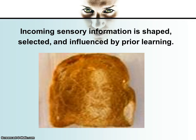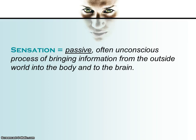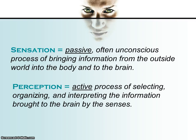Our brains are doing more than just registering sensory information. We are constantly organising, filtering and interpreting information in ways that make sense to us. To recap: sensation is the passive, often unconscious process of bringing information from the outside world into our body and the brain. Perception, on the other hand, is the active process of selecting, organising and interpreting the information brought to the brain by the senses.